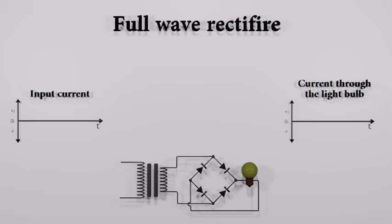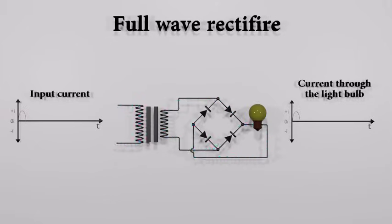When a simple transformer without a center tapped secondary is used, four diodes are required, instead of the one needed for half-wave rectification. It's called bridge rectifier. This four-diode configuration is called diode bridge circuit.